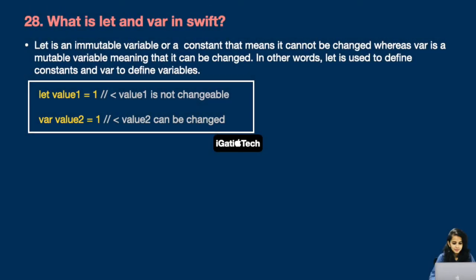Next question: What is let and var in Swift? let is an immutable variable — a constant — that cannot be changed. var is a mutable variable that can be changed. In other words, let is used to define constants and var to define variables. In the example, value1 is not changeable because it is let, and value2 can be changed because it is var.